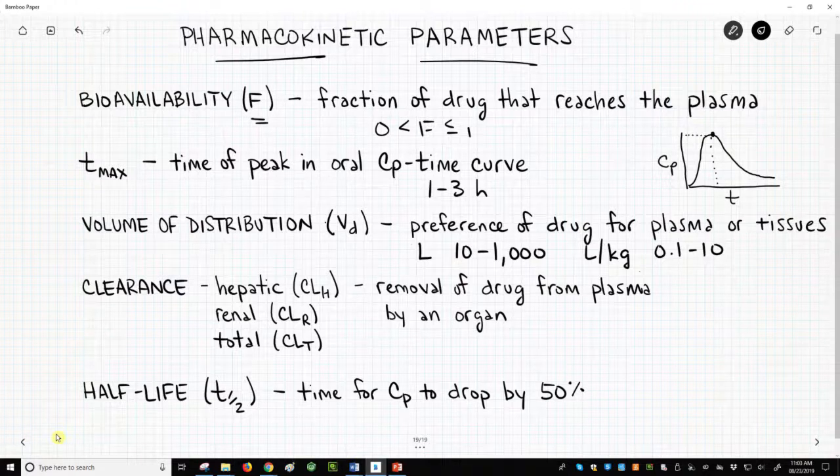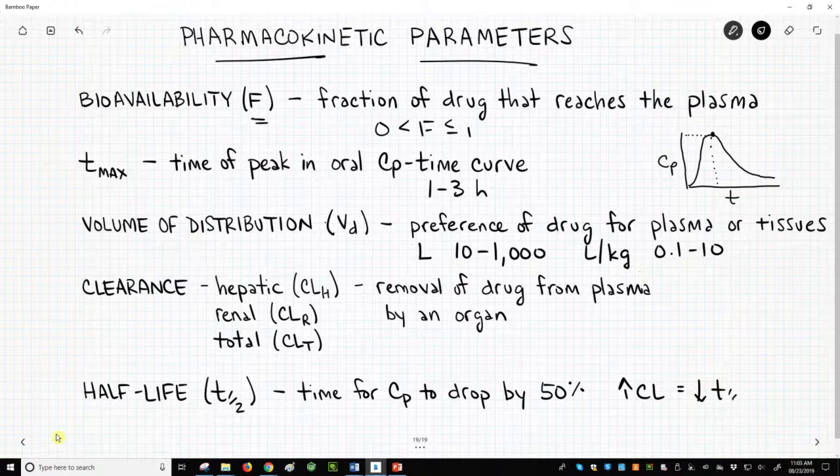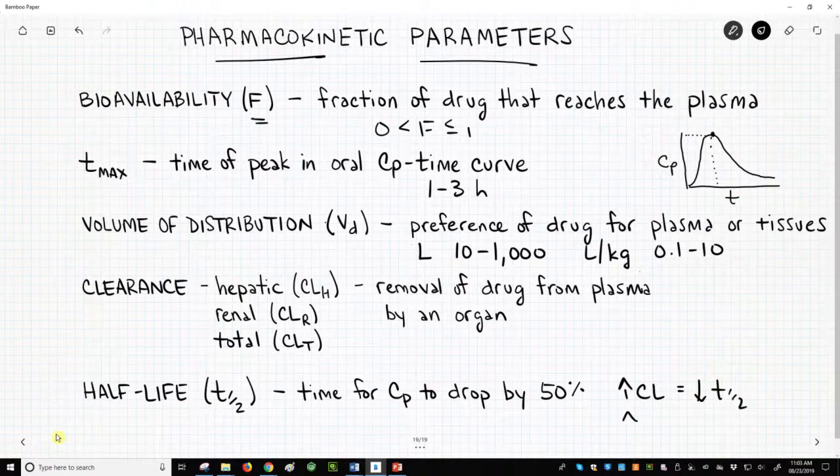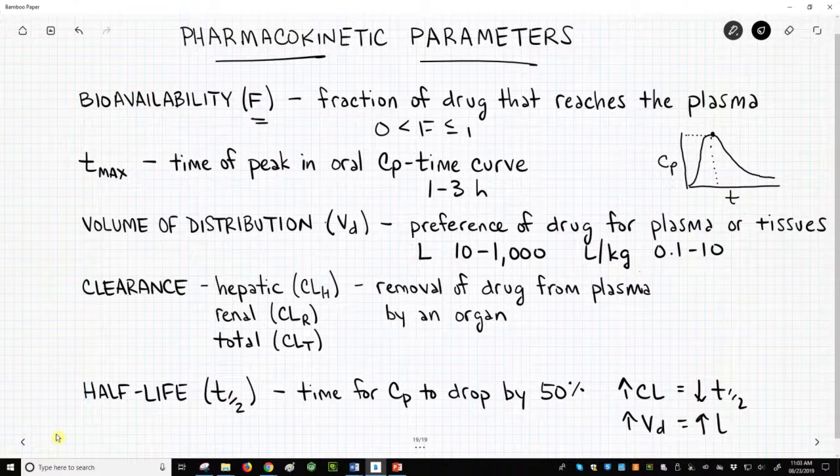Higher clearance means a shorter half-life. A higher volume of distribution means a longer half-life.